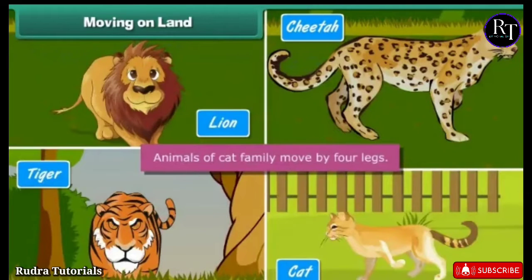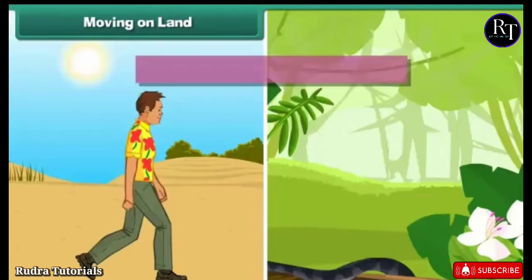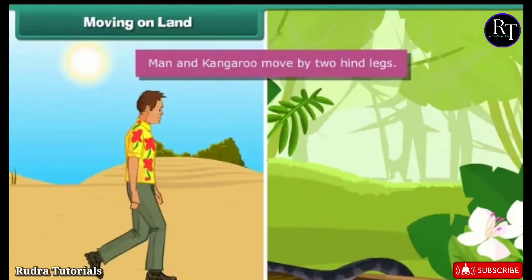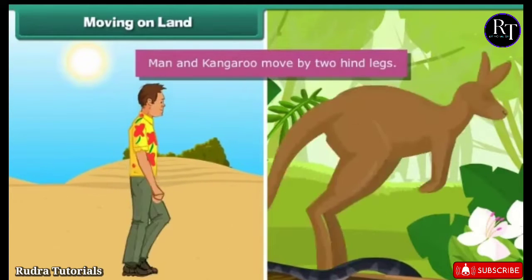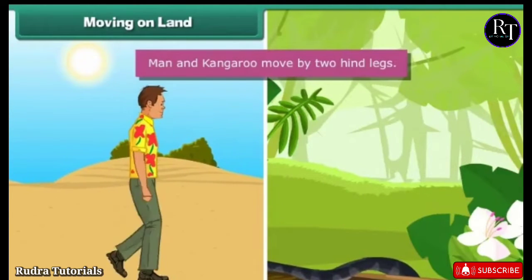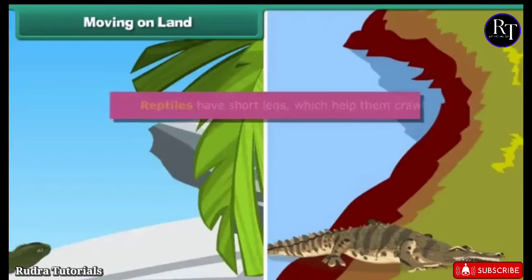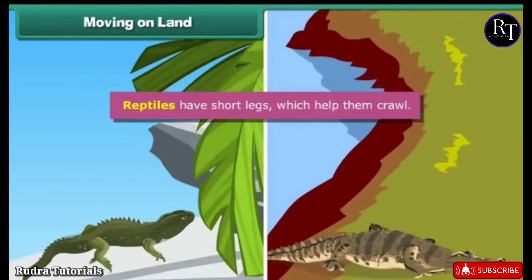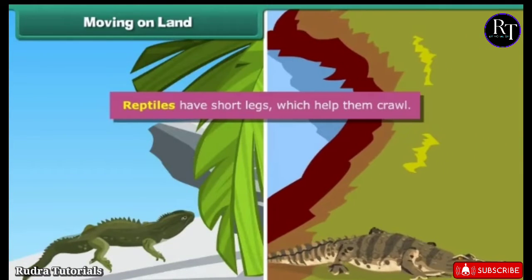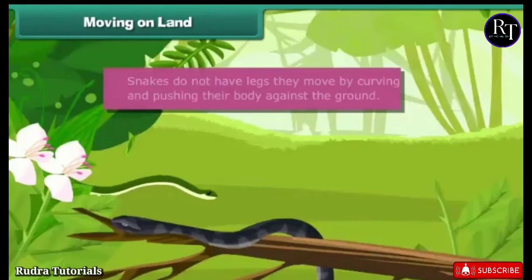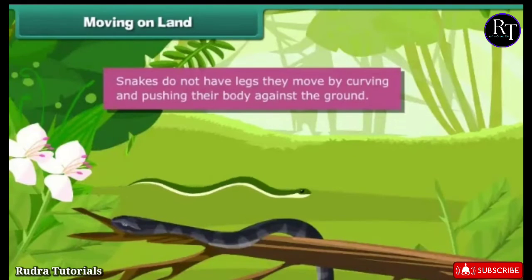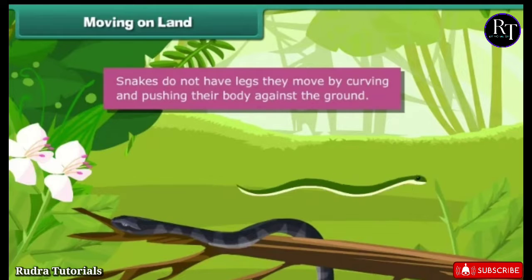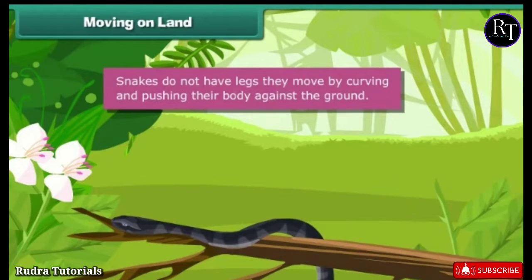Animals of the cat family move on four legs. Man and kangaroo move on two hind legs. Reptiles have short legs which help them crawl. Snakes do not have legs — they move by curving and pushing their body against the ground.